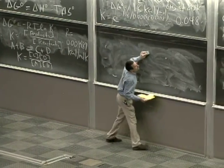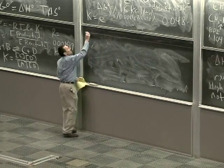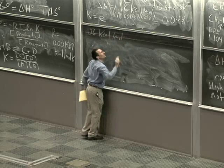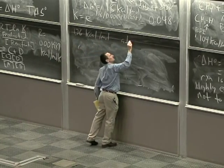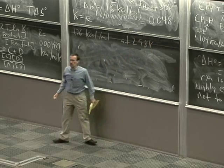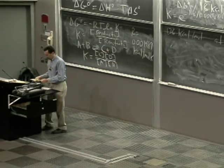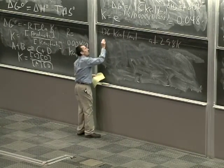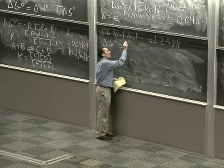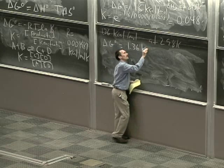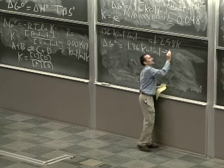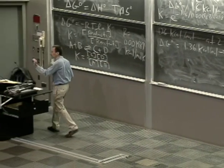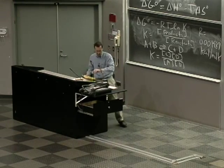The one very useful magic number to keep in mind is 1.36 kilocalories per mole. At room temperature — 298 Kelvin — that corresponds to a 10-to-1 ratio, an equilibrium constant of 10 or 0.1 depending on the sign. Delta G naught equals 1.36 kilocalories per mole leads to K equals 0.1. If our delta G naught is negative — negative means to the right — that leads to K equals 10.